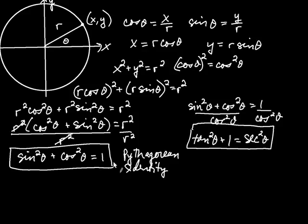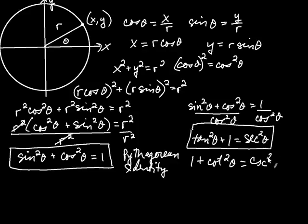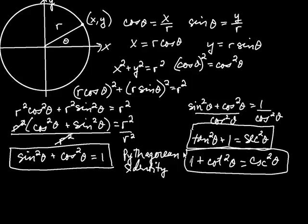If instead we divide the original Pythagorean identity by sine squared, we get 1 + cotangent²θ = cosecant²θ, since 1 over sine squared is cosecant squared. This is yet another version of the Pythagorean identity. The first one gets used all the time, the second fairly often, and the third every now and then.